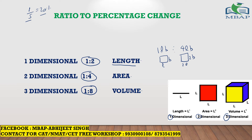It is not a prerequisite that the length ratio has to be 1 to 2. Whatever the ratio of length — say a to b — the ratio of area is a to b squared, and the ratio of volume is a to b cubed. This is because length is one-dimensional, area is two-dimensional, and volume is three-dimensional.